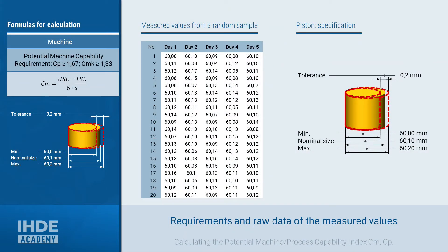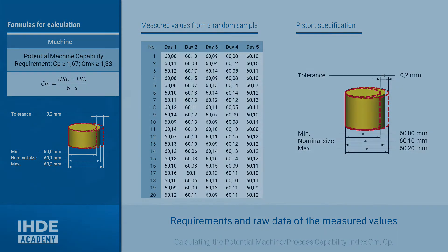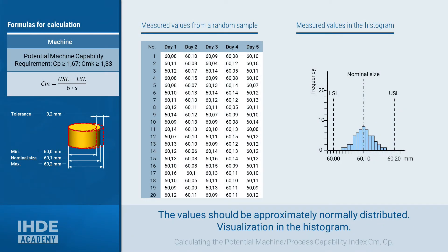Before we can start calculating the machine potential, one more requirement must be checked: the distribution of the values should correspond as closely as possible to a normal distribution, because the calculations presented here are based on this assumption. The raw data does not show how the values are distributed. The simplest way of visualizing a value distribution is in a histogram. If the values are distributed as shown here, this should suffice as proof of a normal distribution. For other distributions, the calculation should be carried out using dedicated software.